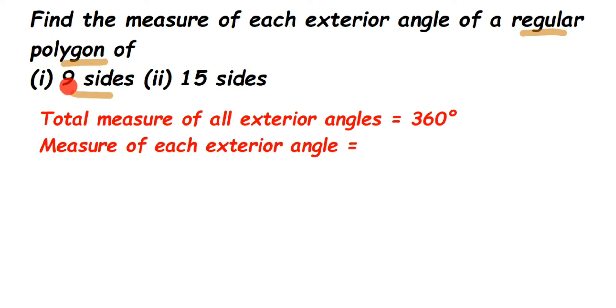Now since they are talking about 9 sides, right? The first question is 9 sides. So I am going to have 9 exterior angles and 9 interior angles. 9 exterior angles and all the 9 exterior angles will be of the same measure. So this 360 degrees I am going to divide by 9.